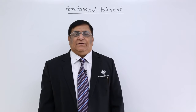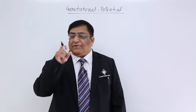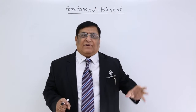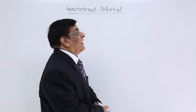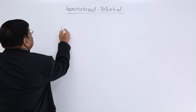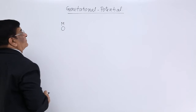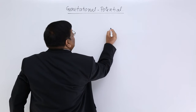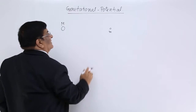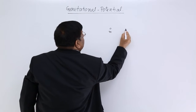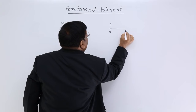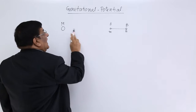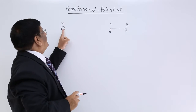Now we have another quantity which tells us the effectiveness of gravitation at a point, and that effectiveness is measured in terms of work done. Here is a mass M — it is having a gravitational field all around it. In that gravitational field I have a small mass. It is being attracted, and I want to take it from point A to point B. If I take it from A to B, then I have to apply force on it because it is being attracted by this mass.